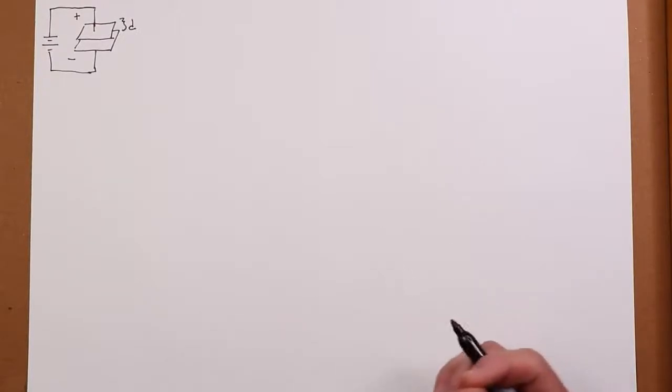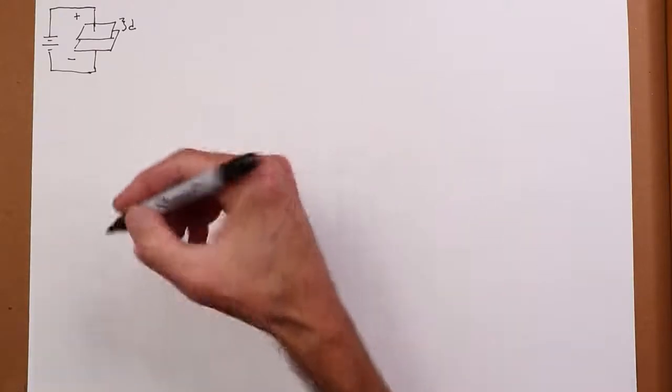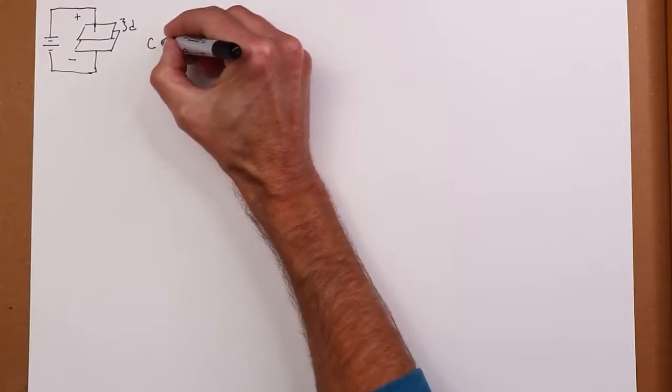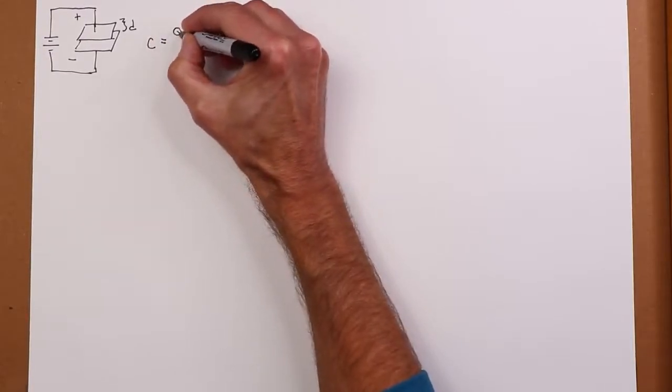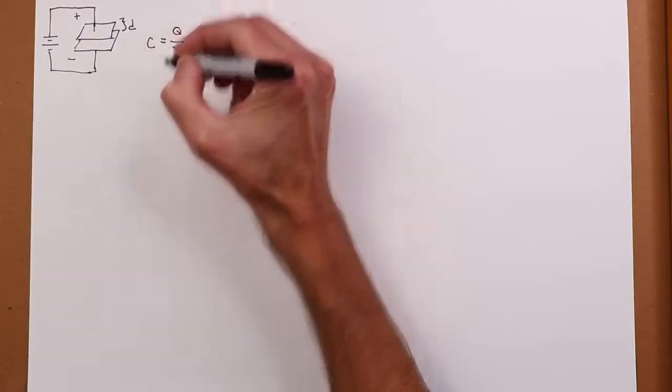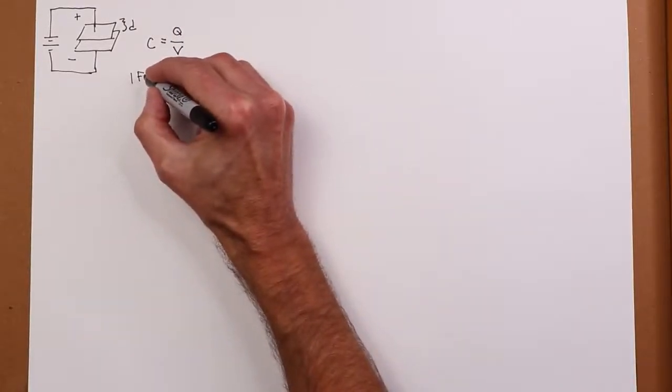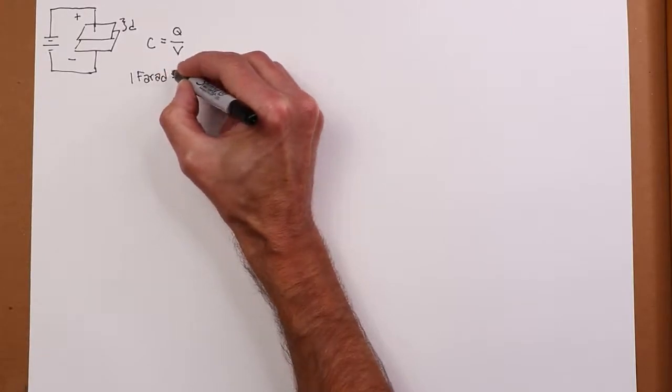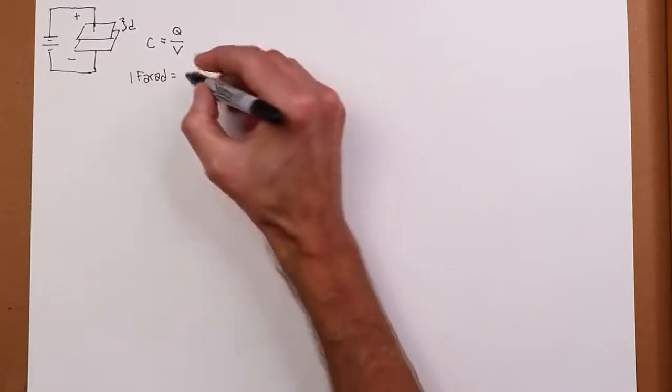Now the unit for this, for capacitance, is called the farad. And we can define capacitance in terms of charge and voltage. So C is equal to Q over V. And one farad, and we use a capital F to abbreviate that, but one farad is equal to one coulomb per volt.